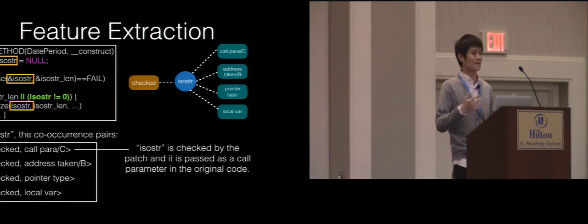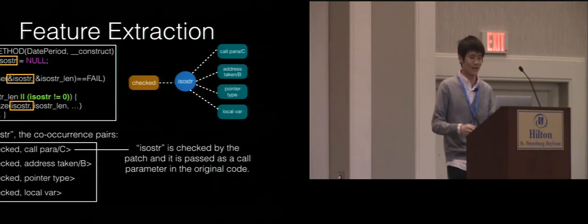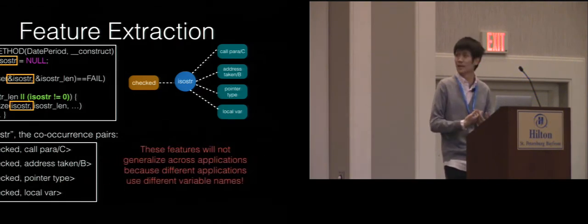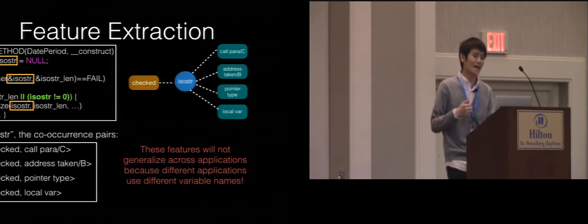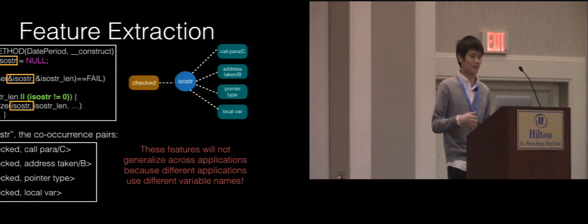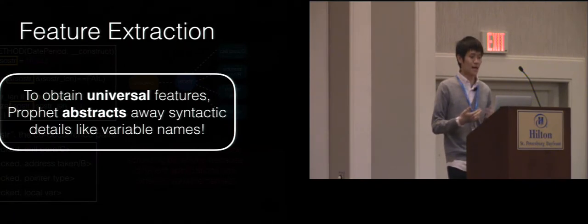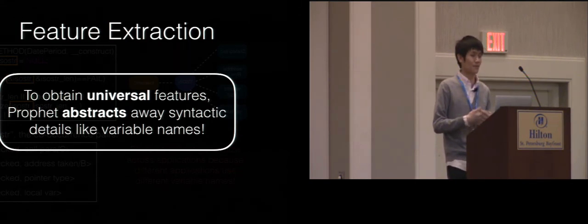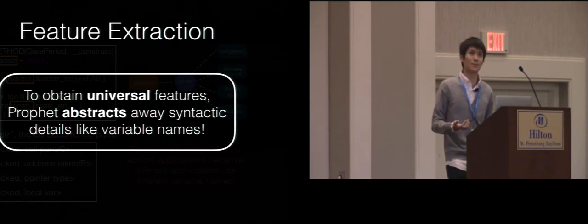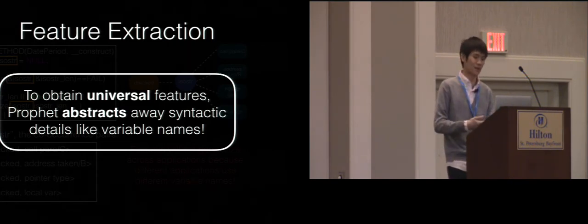Is this enough to learn across applications and identify correct code? Unfortunately, still no, because it contains too many syntactic details. Different applications use different variable names. Unless we restrict ourselves to learning from the same application, we will not likely observe the ISO_STR variable again. To obtain universal features, Profit abstracts away syntactic details like variable names and function names. To clarify — I'm not saying function names or variable names are completely useless. I'm saying that to obtain universal features, we need to abstract them away. It might be possible with fancy normalization techniques to extract information from them, but that is future work.